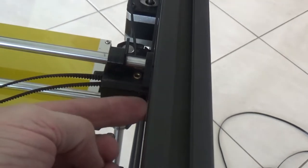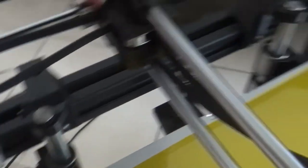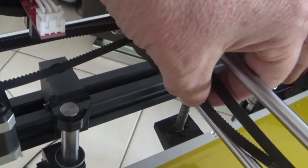So the top one goes through the slot here towards the front of the printer, around the motor pulley, back under the flat pulley, and out towards the X carriage.